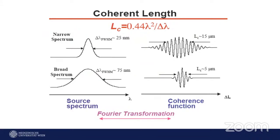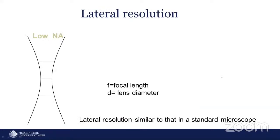OCT is based on the principle of a low-coherence light source. We use a broadband light source — one with a range of wavelengths. For example, with a bandwidth of 25 nanometers we get a coherence length of 15 microns, which defines the axial resolution of the system. A larger bandwidth gives a smaller coherence length, meaning higher resolution. Therefore, broadband light sources are preferred for OCT to achieve higher axial resolution.